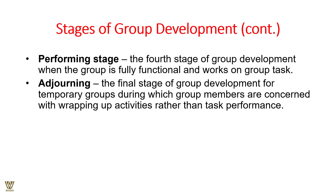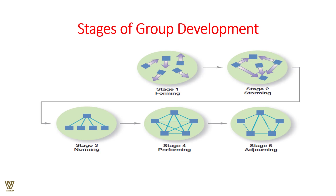Then comes the performing stage, where the group assimilates, unifies, and delivers — proving its effectiveness and worth. This is the fourth stage, whether functional, task-based, or otherwise. After accomplishing the task, if it is a task force, it can dissolve altogether. The adjourning stage is the final stage of group development, where people part ways since the common objective has already been achieved.